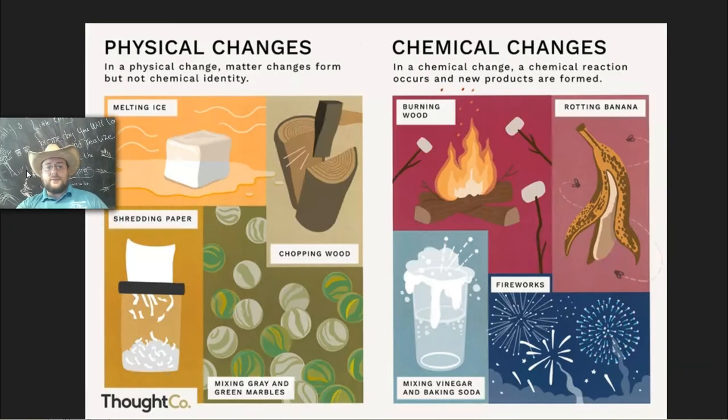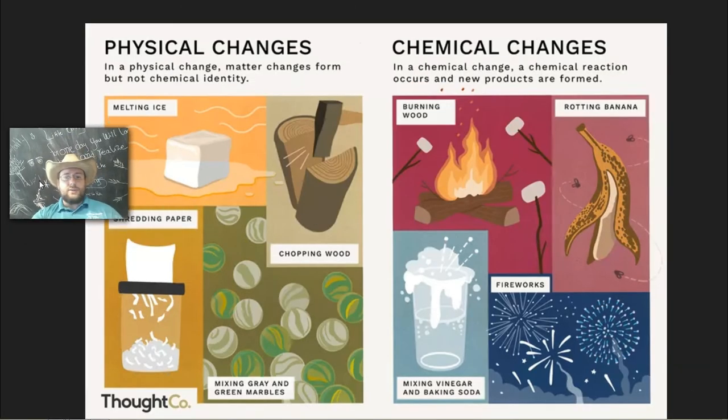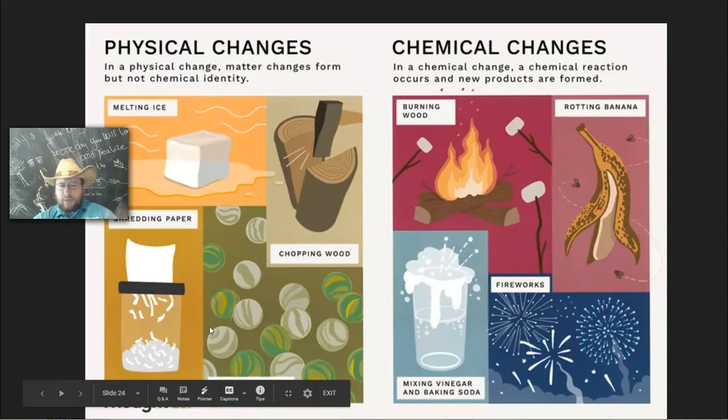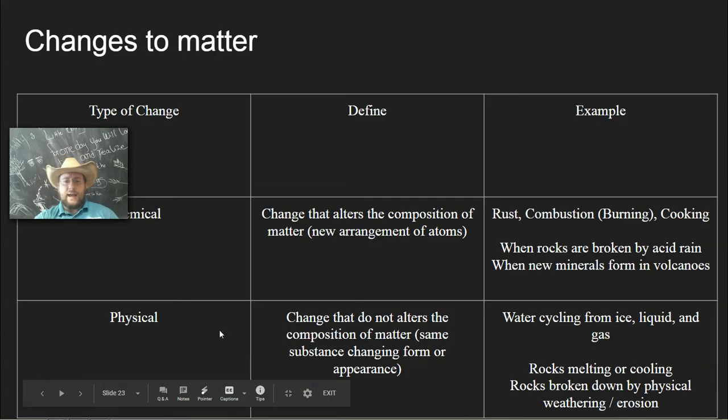Physical changes are those that change the material without changing what it actually is. It's still the same chemical identity. Then we have chemical changes, which are changes that do change the material, the nature of what it is. New products are formed, bonds are broken, chemical reactions take place. You see some examples in these pages.